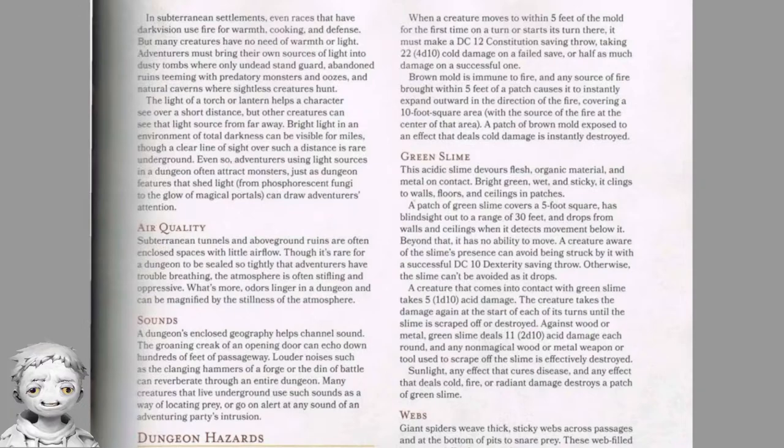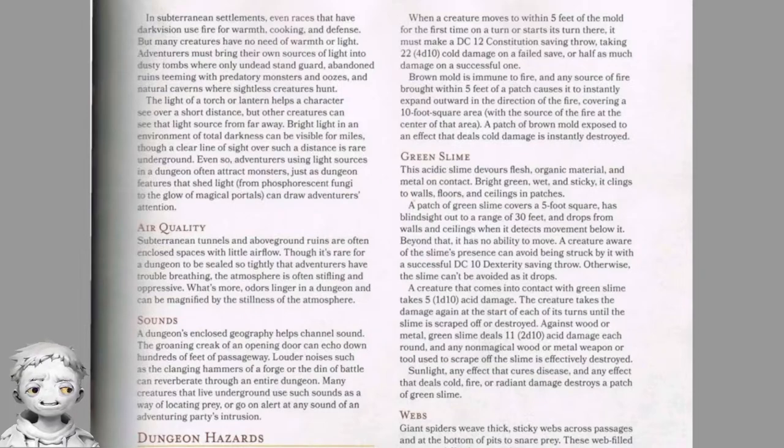Air quality: subterranean tunnels and above-ground ruins are often enclosed with little air flow. Though it's rare for a dungeon to be sealed so tightly that adventurers have trouble breathing, the atmosphere is often stifling and oppressive, and odours linger and can be magnified by the stillness. Sounds: a dungeon's enclosed geography channels sound — the groan of an opening door can echo hundreds of feet down a passageway. Louder noises like forge hammers or battle can reverberate through an entire dungeon. Many underground creatures use such sounds to locate prey or to alert to an adventuring party's intrusion.